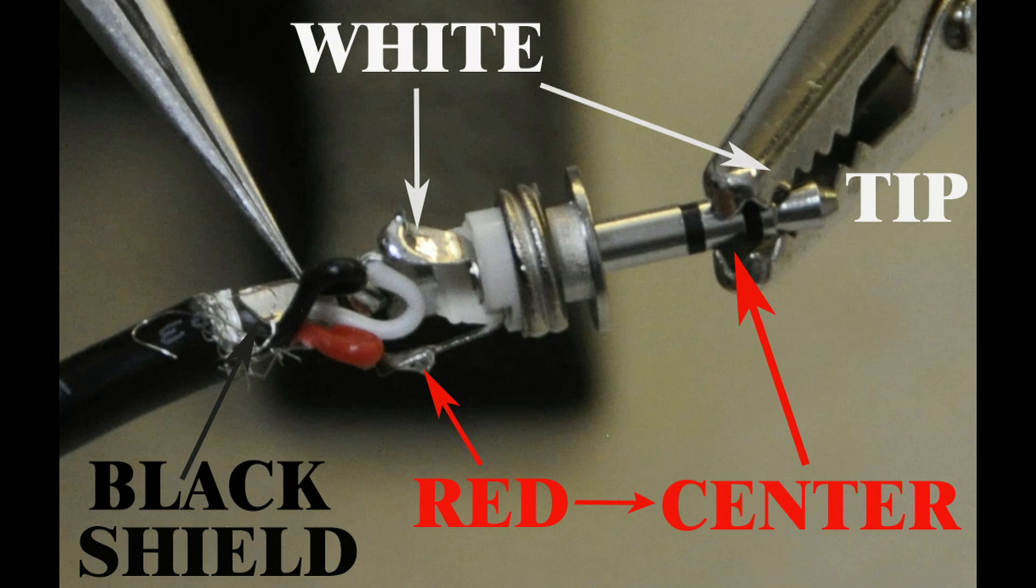We only need three wires: black, red, and white. So if you have a cable with four wires just cut off the extra green wire.